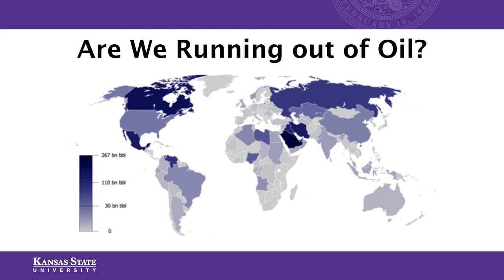Peak oil production in the United States occurred in about 1971 — we have not produced more oil per year than we did in 1971 and have been on a decline ever since. But that's not the case for the rest of the world. Globally, we have not reached peak oil production. Many countries individually have experienced peak oil like the United States, but globally we've kind of plateaued — not increasing production, but not necessarily decreasing either. Scientists and experts are not willing to say we've reached global peak production. We still have significant oil reserves in the world.